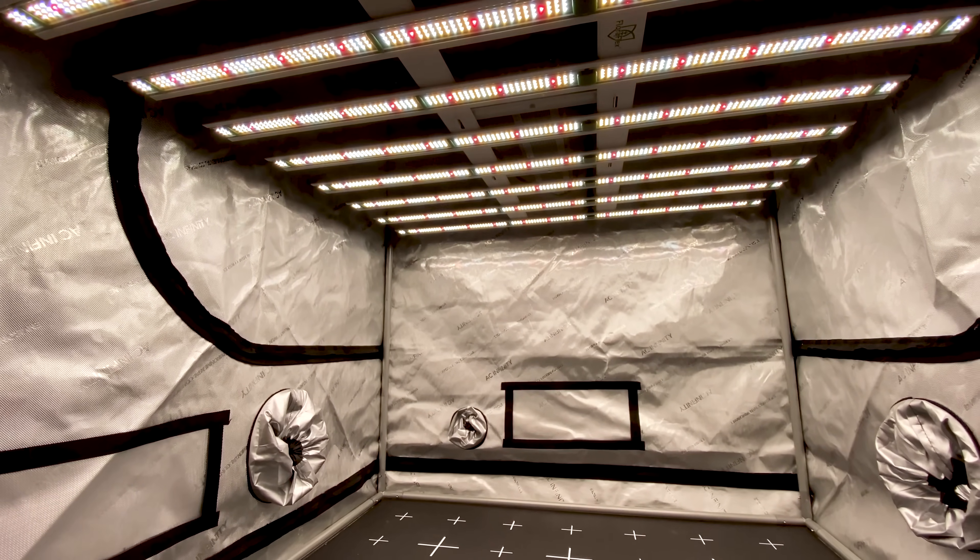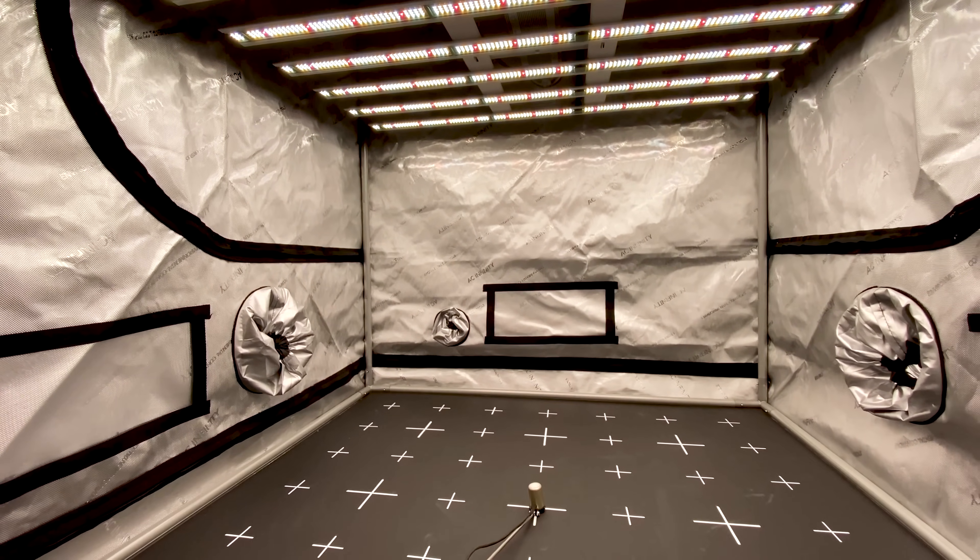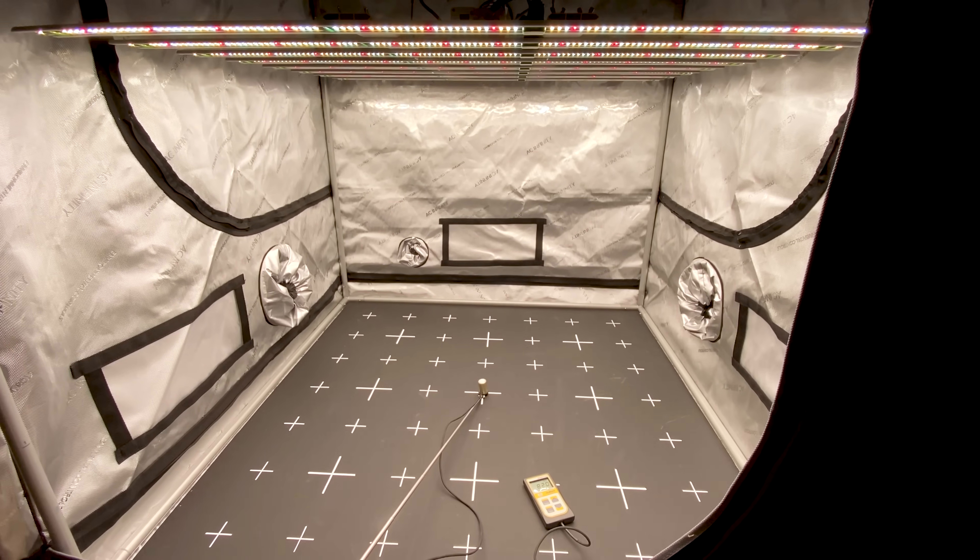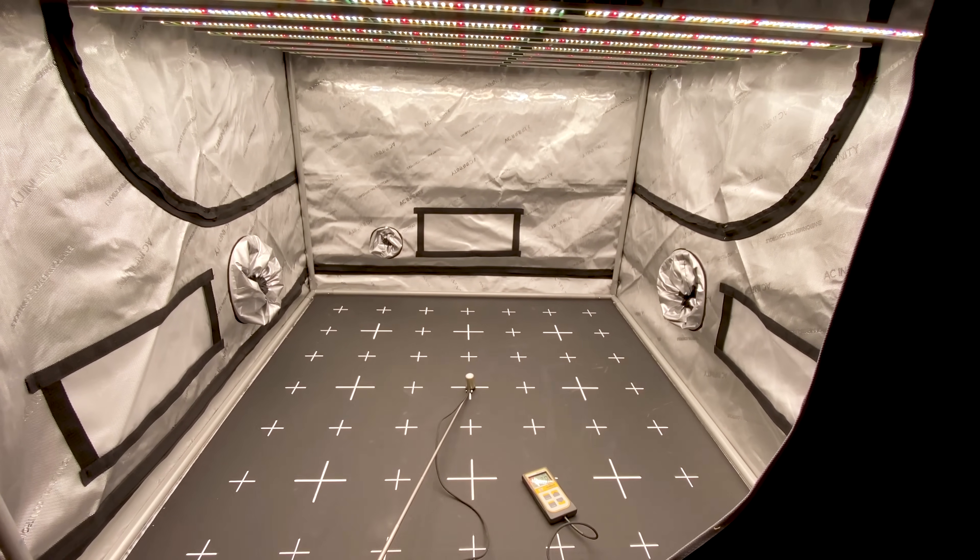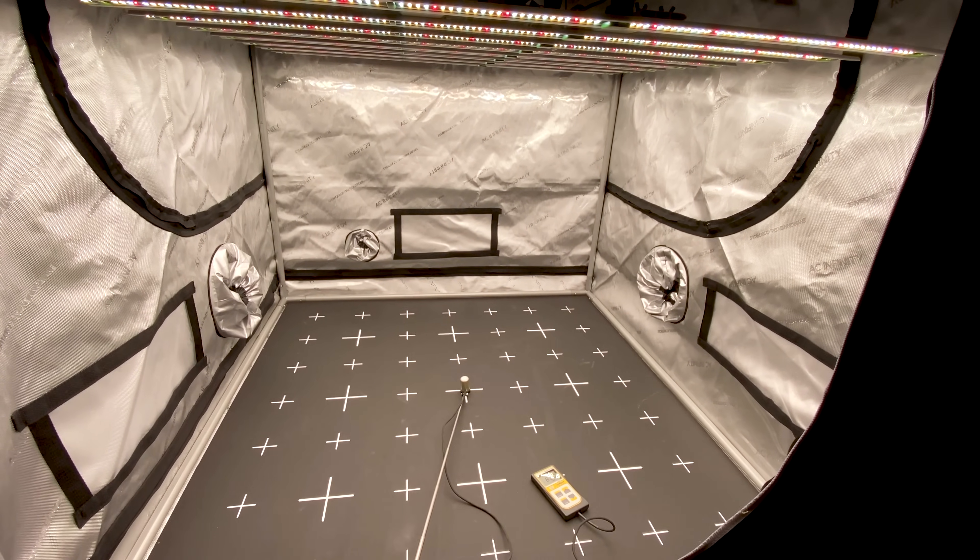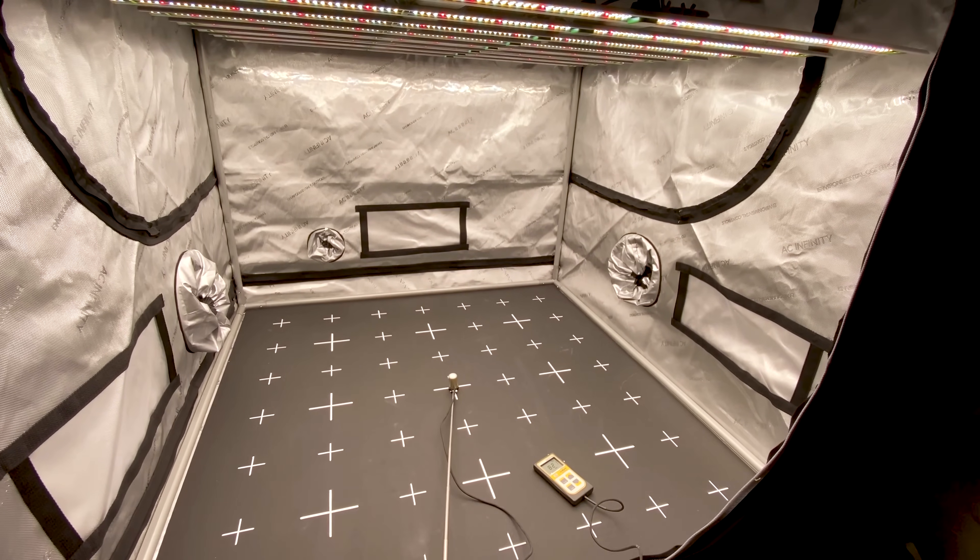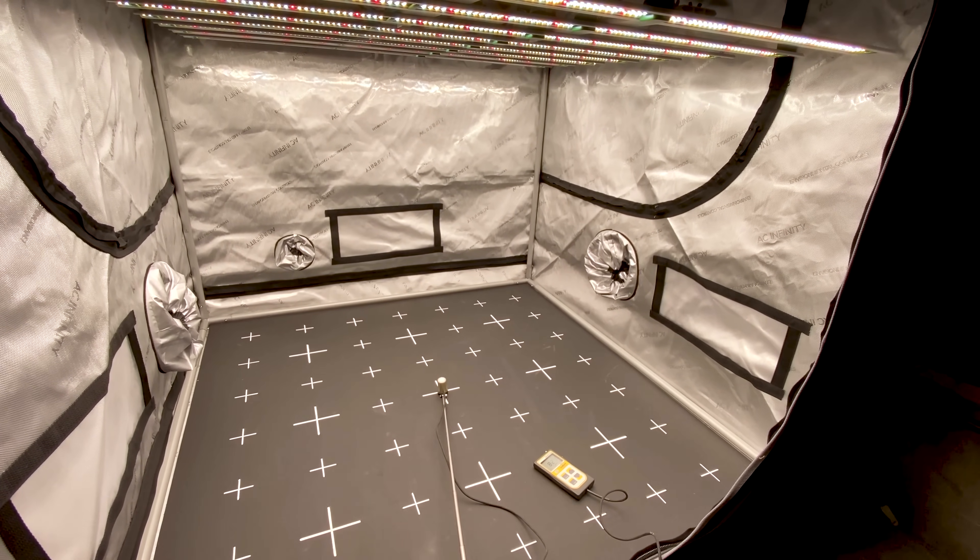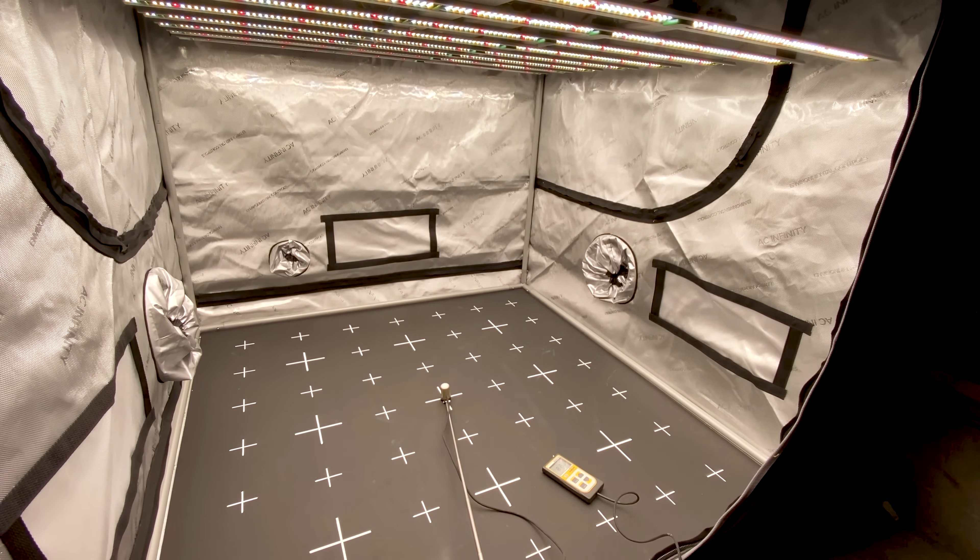Let's take a look at my par measurements in a 4x4 AC Infinity grow tent. Keep in mind that the front of the tent was open while I took these measurements so the actual readings will be a bit higher, up to 50 PPFD or so in some areas, but overall this gives you a good idea of the light's intensity and uniformity.